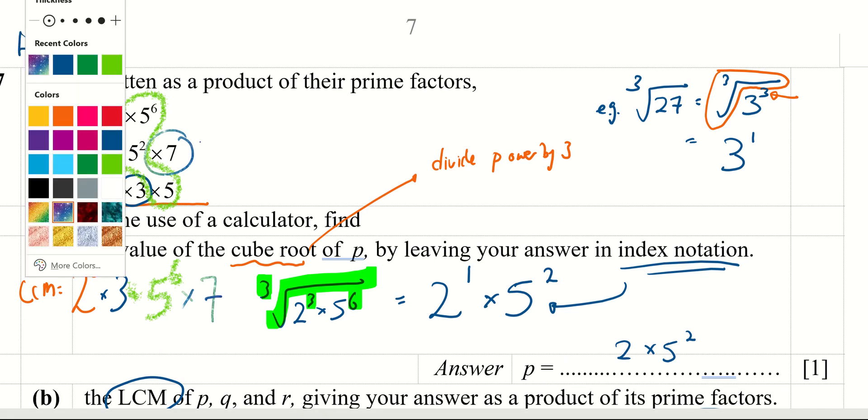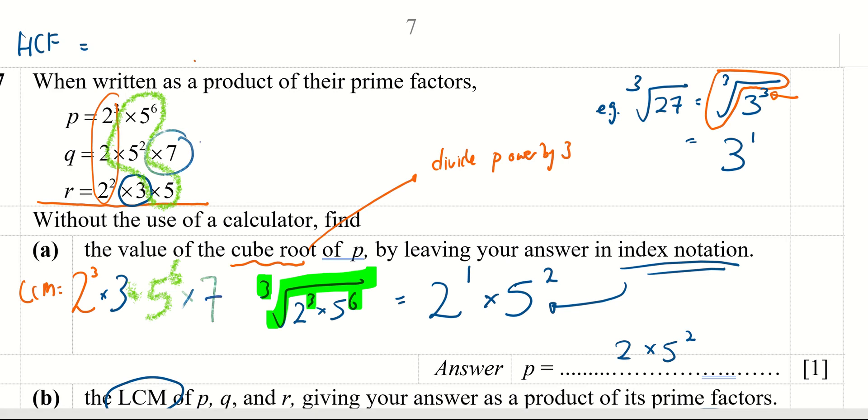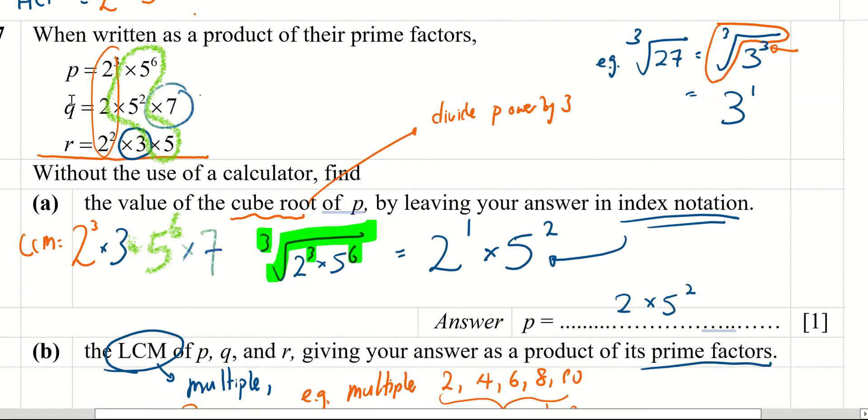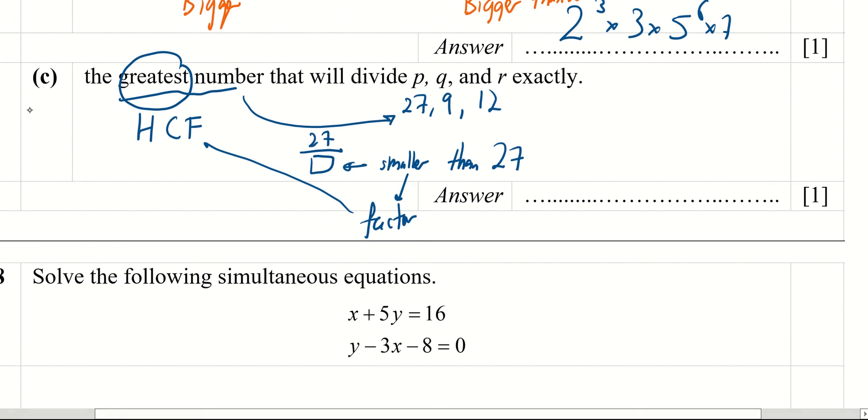So for HCF, if I look at 2, the smallest one is 2. There is no 3 in p and q. There is 5, but this one is common. There is no 7 in p and r. So the answer is 2 times 5, which equals 10.